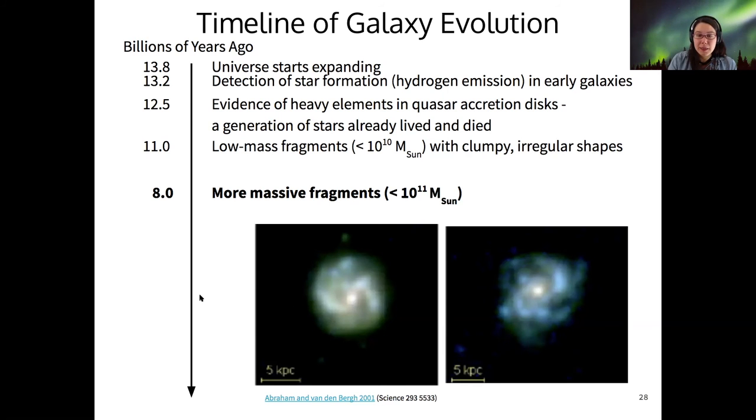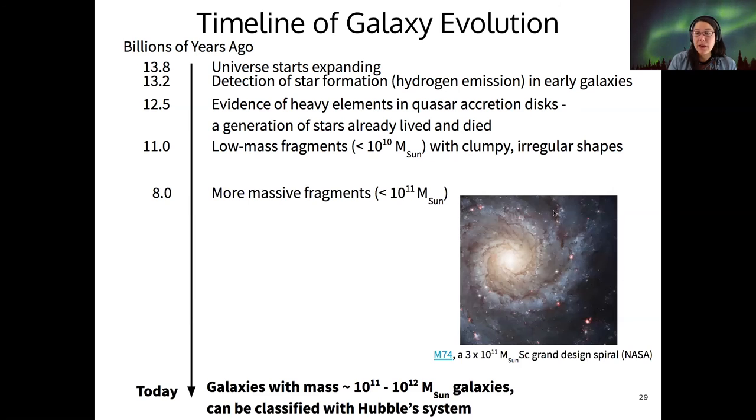Somehow we need to get from these more massive fragments to these very orderly, beautiful spirals that we see today. Modern galaxies, the ones nearby us, have mass around 10 to the 11 to 10 to the 12 solar masses. Our Milky Way is within that mass range, so is Andromeda, and many of the nearby galaxies can be classified with Hubble's system.